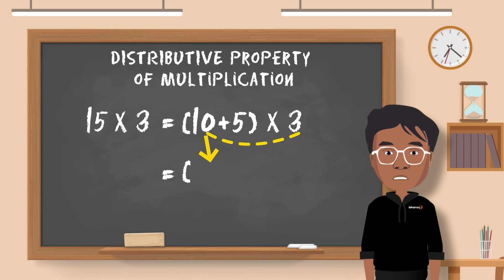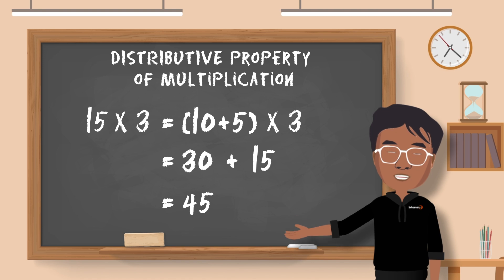We can do 10 multiplied by 3 plus 5 multiplied by 3. So here, 10 multiplied by 3 is 30 and 5 multiplied by 3 is 15. When we add 30 and 15, our answer is 45. See, isn't that easy? This property of multiplication can help you solve large sums without taking much time.